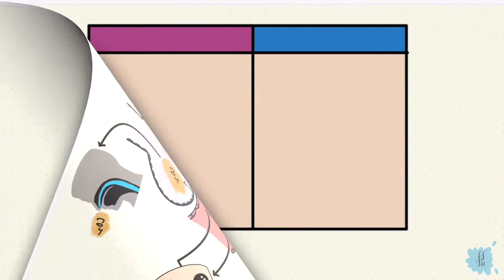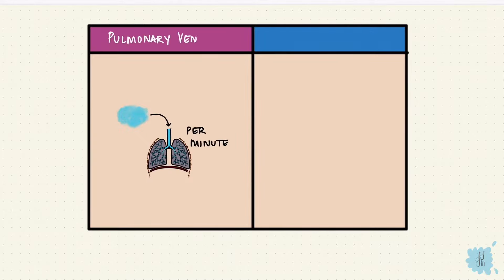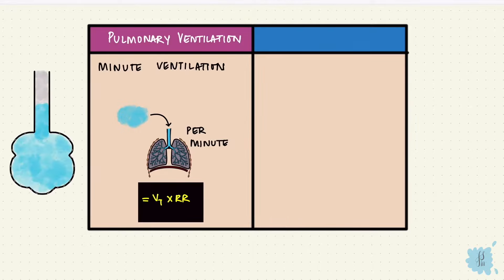The air that moves into the lungs per minute is called the pulmonary or the minute ventilation. It's the product of the tidal volume and the respiratory rate. But this includes dead space where there's no gas exchange taking place.